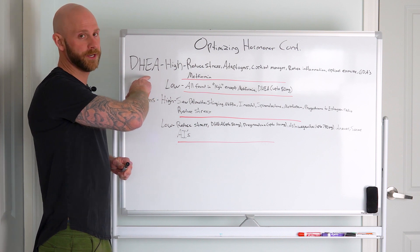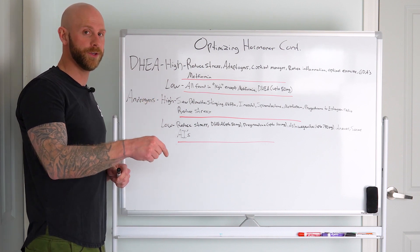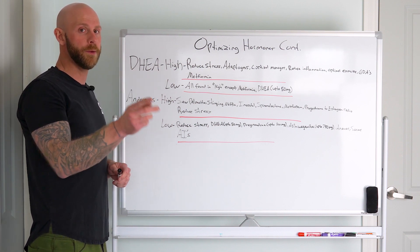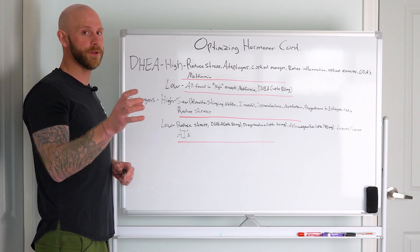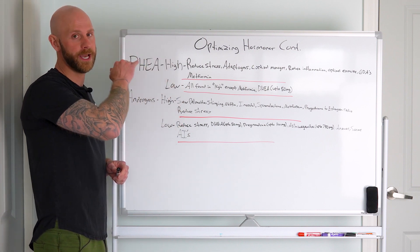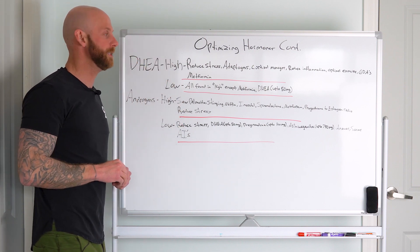A Dutch test will tell you DHEA, but it'll also tell you your cortisol and what you're doing with it, and that can give you an indicator of which route you should take for lowering that DHEA.